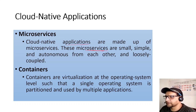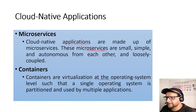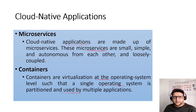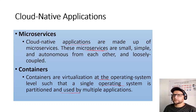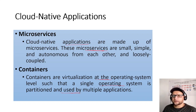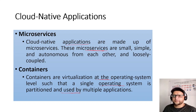Cloud-native applications use microservices — small, simple, autonomous, and loosely coupled components. Containers are virtualization at the operating system level, where a single OS is partitioned for multiple applications. Docker containers with a container manager like a Docker engine manage those containers. Applications in containers are not tied to a specific operating system — they are platform-independent.